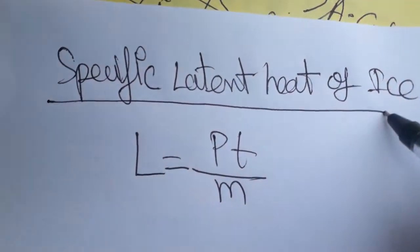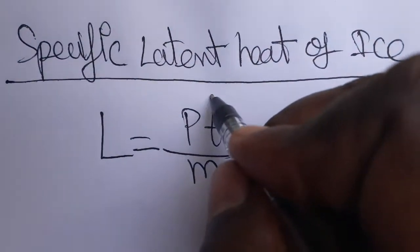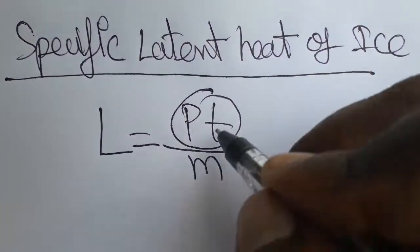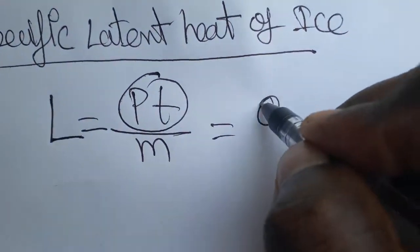Hello students, today we are going to discuss specific latent heat of ice, SI unit and dimensional formula. Power into time per unit mass we can take it as specific latent heat, or energy per unit mass.